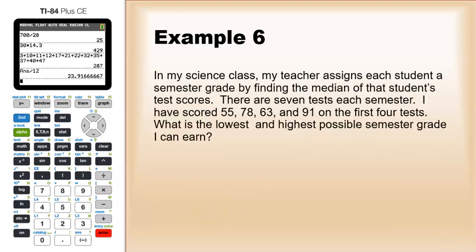Let's try another one. In my science class, my teacher assigns each student a semester grade by finding the median of that student's test scores. Suppose there are seven tests for that semester. So far I've scored 55, 78, 63, and 91 on the first four tests. So what's the lowest and highest possible semester grades you can earn?